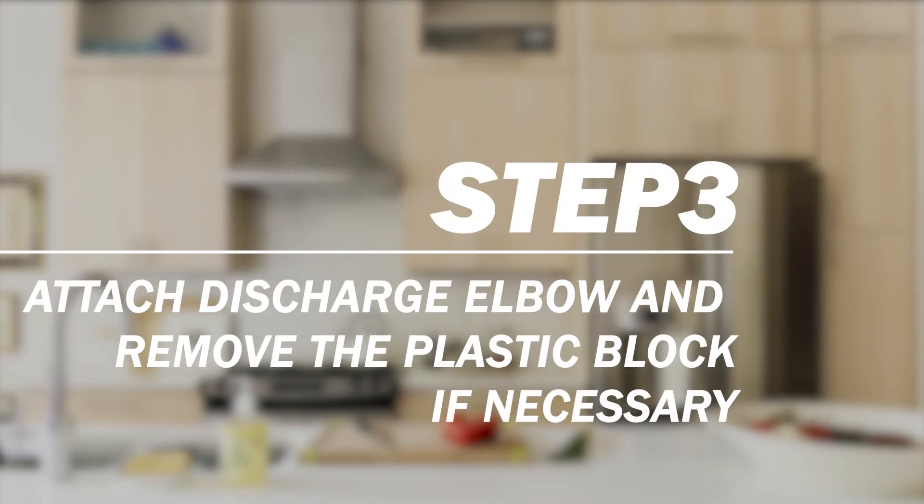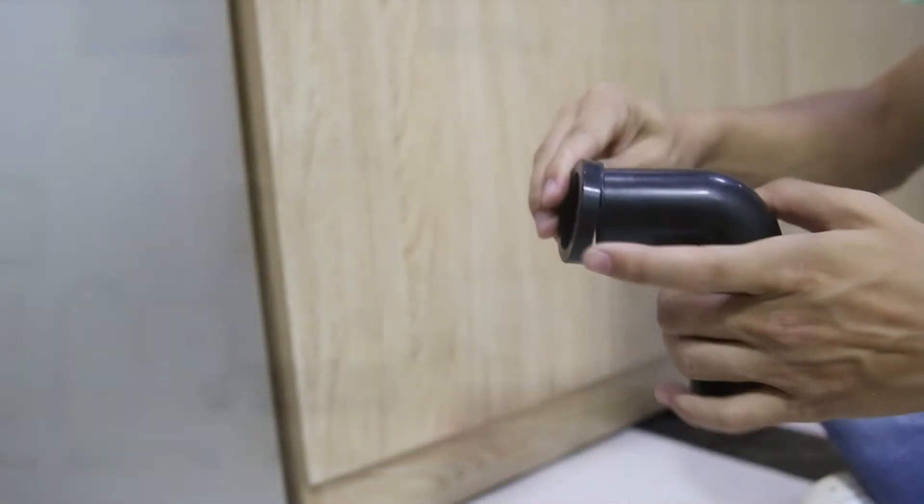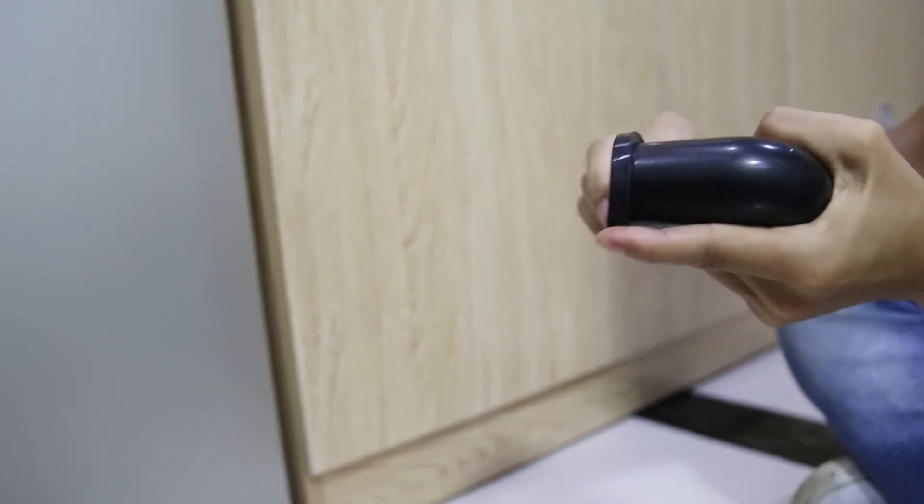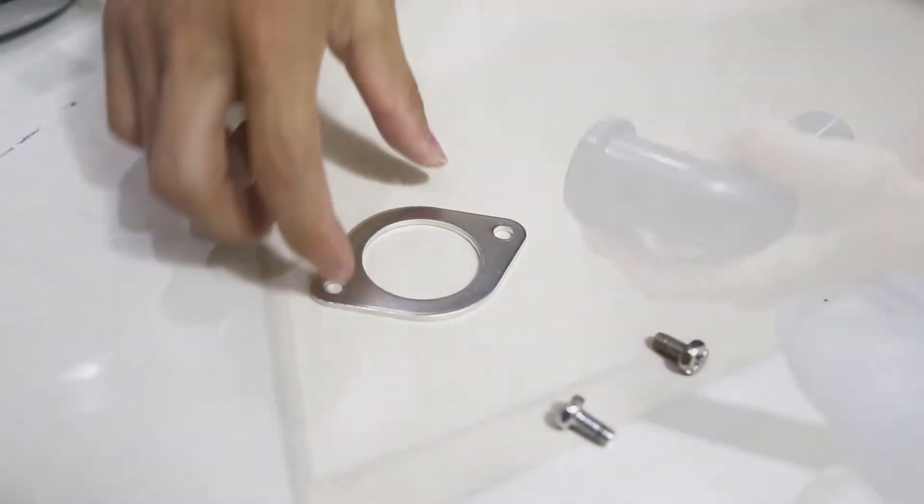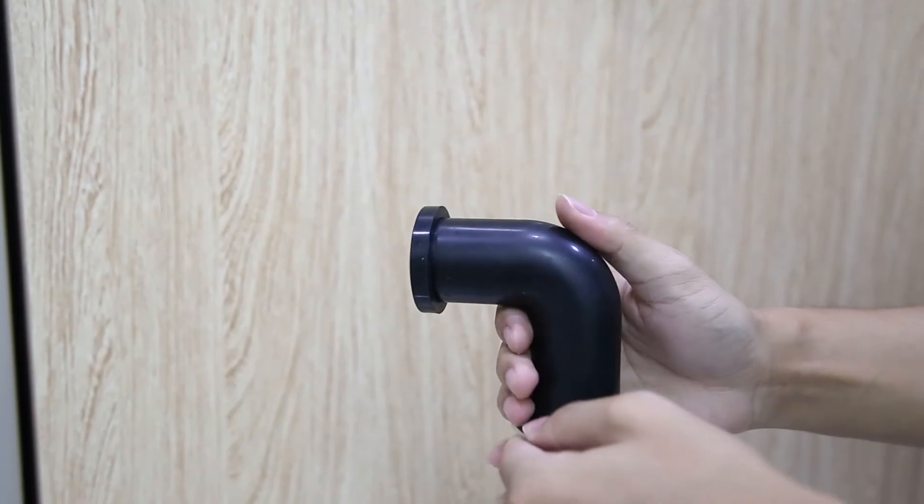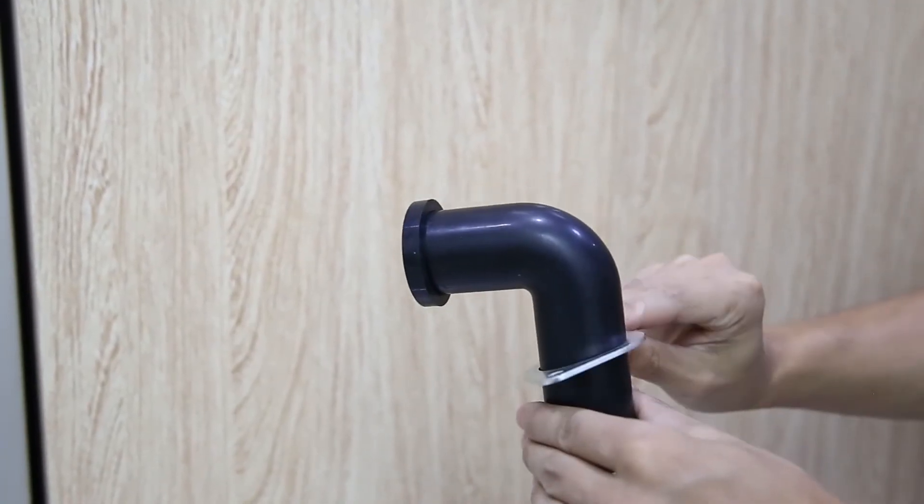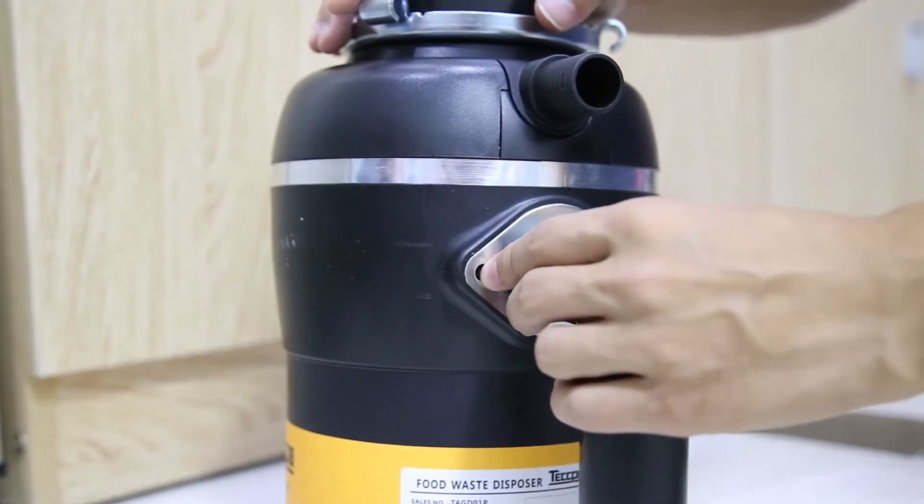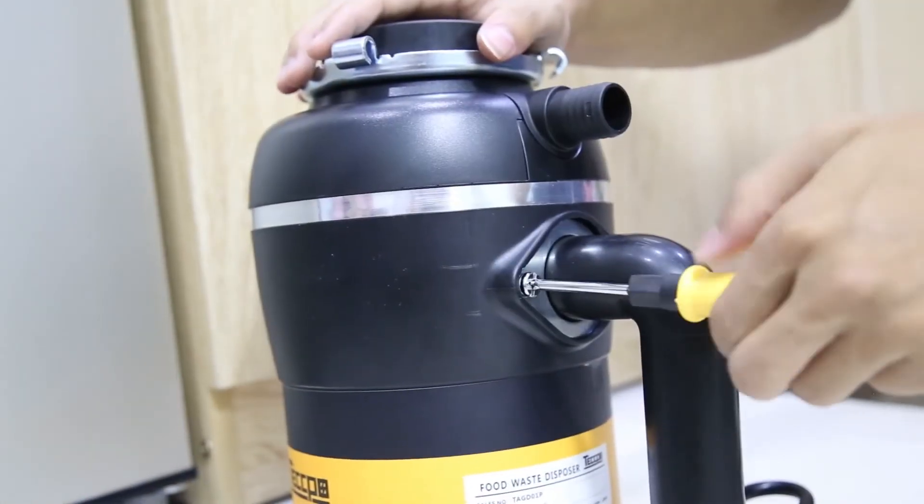Attach discharge elbow and remove plastic block if necessary. Make sure the rubber gasket is on the provided discharge elbow. Slide the metal bracket over the elbow and insert it into the discharge outlet. Tighten the two screws evenly.